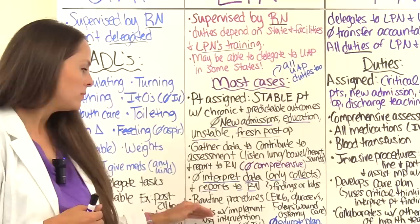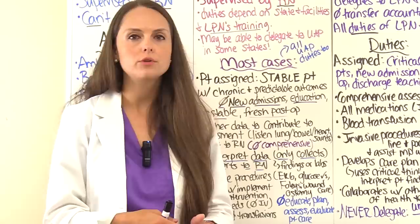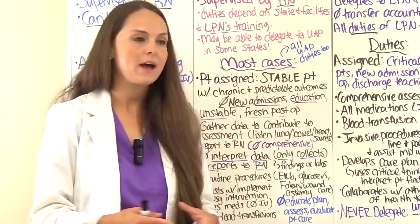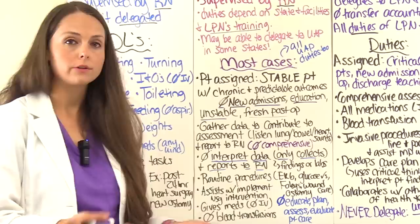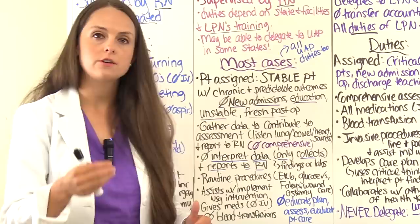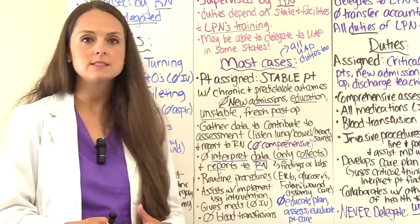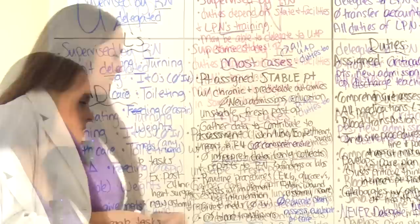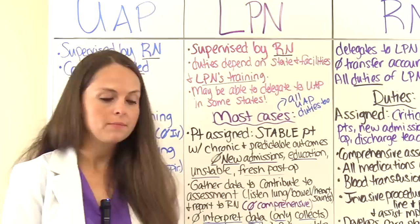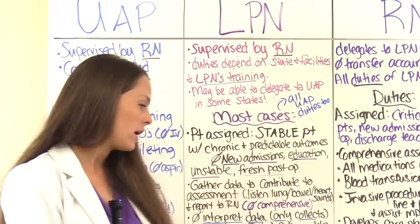The LPN does routine procedures with predictable outcomes that don't require critical thinking for unexpected situations — things like obtaining an EKG, doing glucose checks, inserting Foley catheters, wound care, and ostomy care. They can assist with implementing nursing interventions on the care plan, but they don't develop the care plan or nursing interventions — the RN does. They can give medications, except for IV medications, blood products such as blood transfusions, platelets, TPN, or similar.